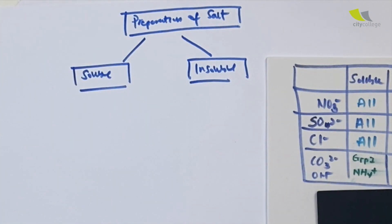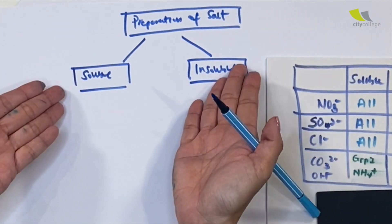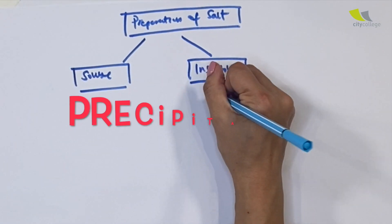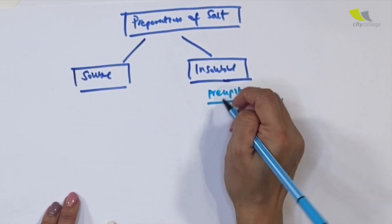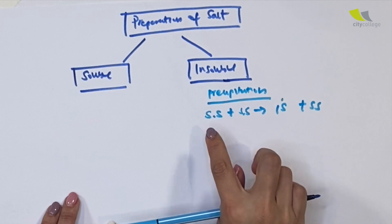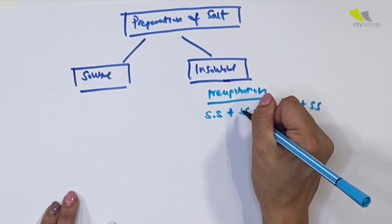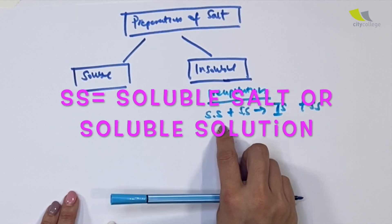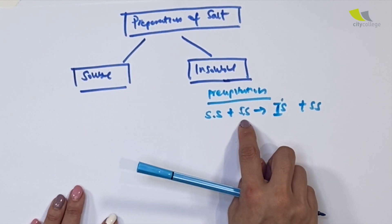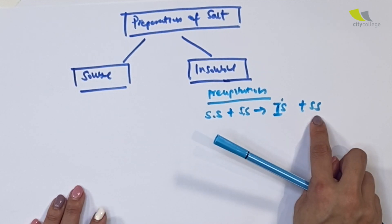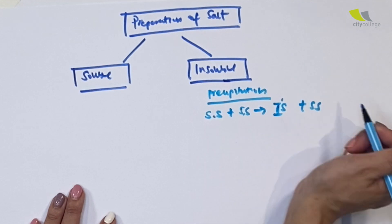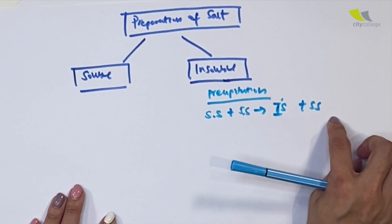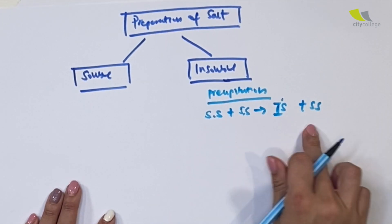After you decide whether they are soluble or insoluble, what is the actual method? For insoluble salts, the method is precipitation. What is precipitation? Soluble solution plus soluble solution gives you an insoluble salt and a soluble solution. So SS plus SS will give you IS and SS. That is precipitation.